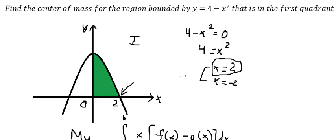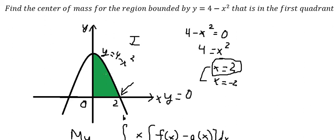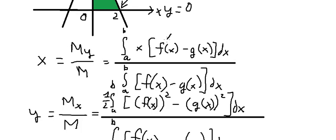Looking at the graph, the upper function is y equals 4 minus x squared and the lower function is y equals zero. So f(x) equals 4 minus x squared and g(x) equals zero. Now we can find x-bar and y-bar.